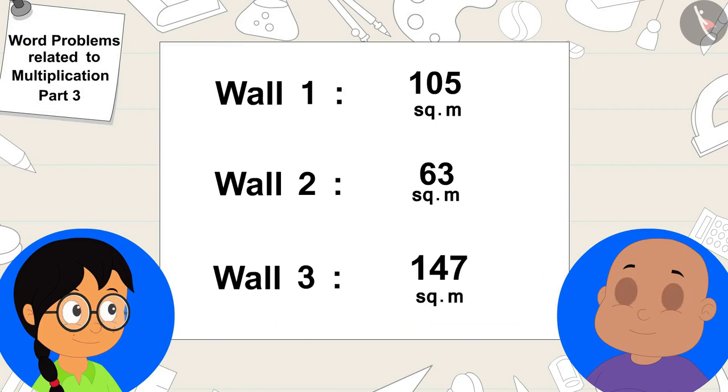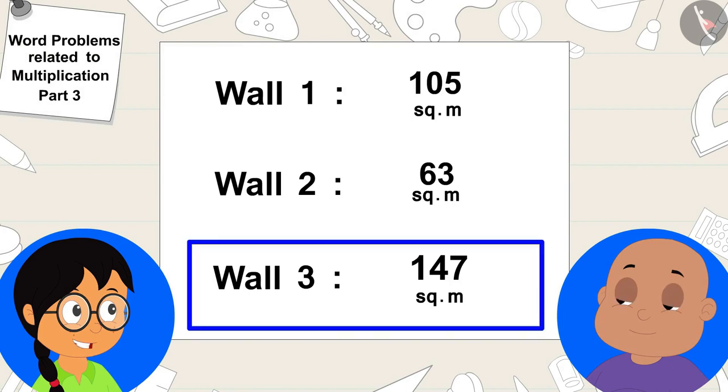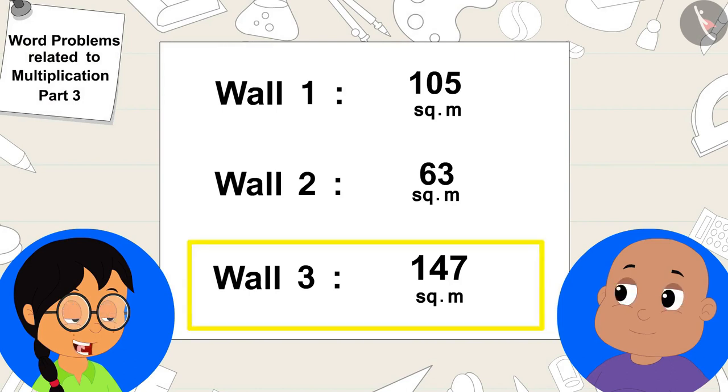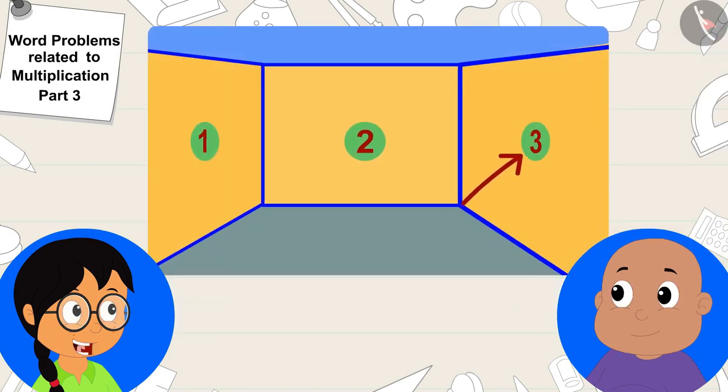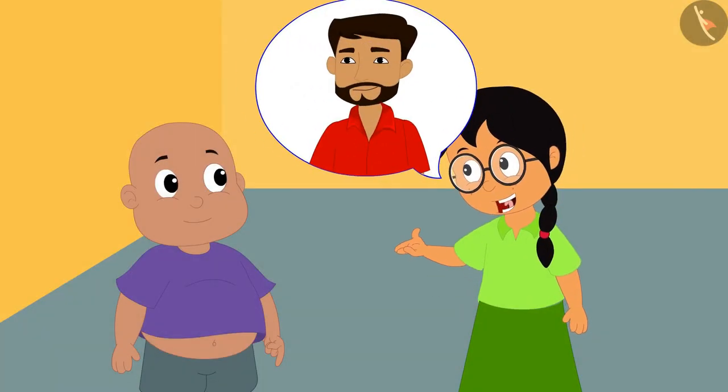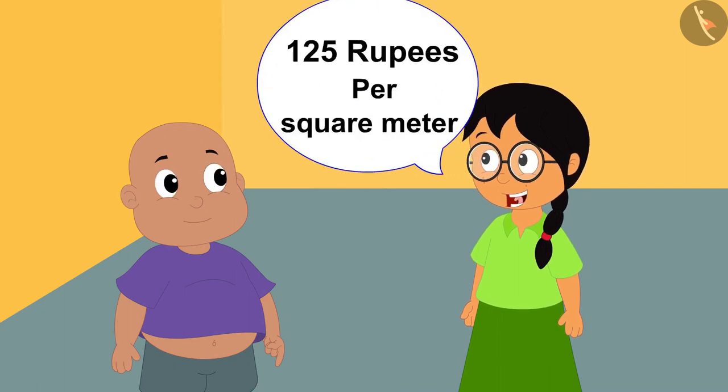Meenu wrote the area of the three walls on a paper. Look Bablu, the area of this wall is 147 square meters, which is the maximum area, so I will put my favorite pink color on this wall, Meenu excitedly told Bablu.